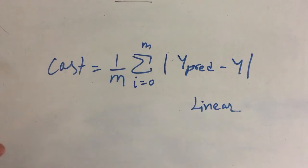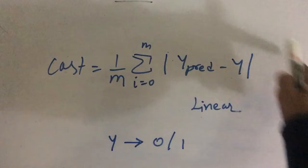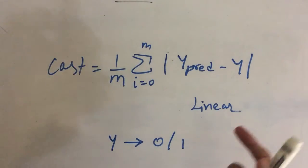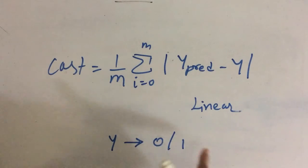But logistic regression is used for making binary classification. So y here can take only either of the two values. It can either take 0 or 1 as the output value. When we try to use this cost function with logistic regression where output is in the binary form, what happens is that we end up in a local minima instead of the global minima.